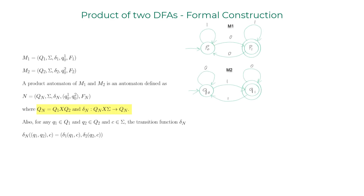Let me explain this with an example. Q1 is the set {p0, p1} and Q2 is the set {q0, q1}. So Q_N, the Cartesian product of Q1 and Q2, gives you four pairs. The states in the product automaton are labeled with those pairs.